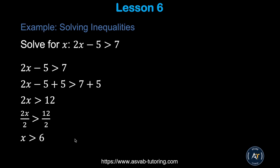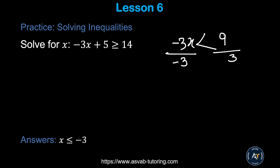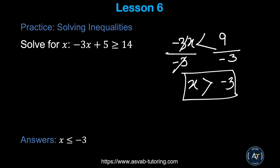Next we'll learn inequalities, which are very similar to regular equations. For 2x − 5 > 7: add 5 to both sides to get 2x > 12, then divide by 2 to get x > 6. Important rule: if you have −3x < 9 and divide both sides by −3, the inequality sign flips. So x > −3. Anytime you divide by a negative number, the sign changes.